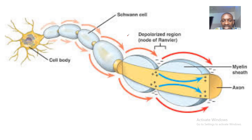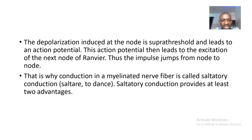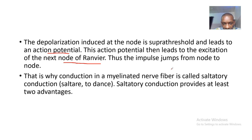This is basically saltatory conduction. The Schwann cell and myelin sheath act as an insulator, so action potentials have to move from one node of Ranvier to the next. The depolarization induced at the node is suprathreshold and leads to an action potential. This action potential then leads to the excitation of the next node of Ranvier.